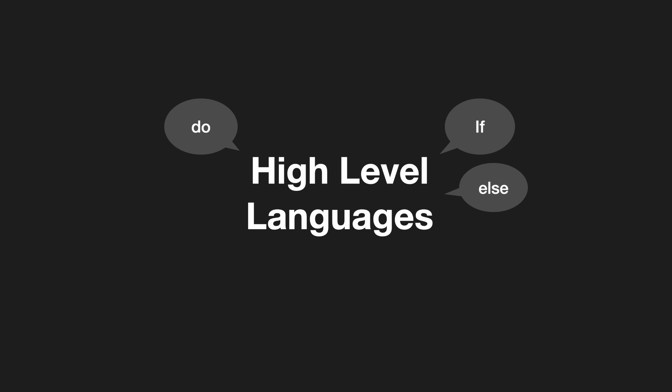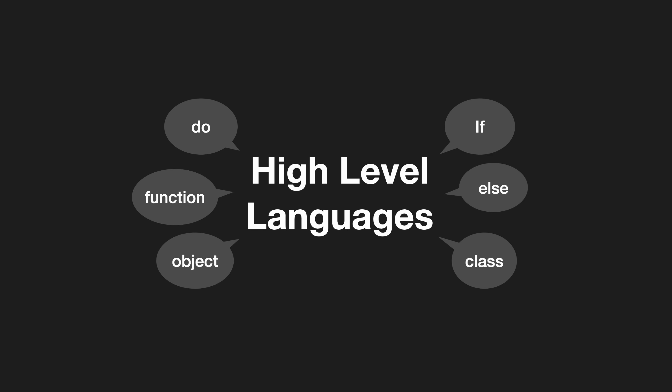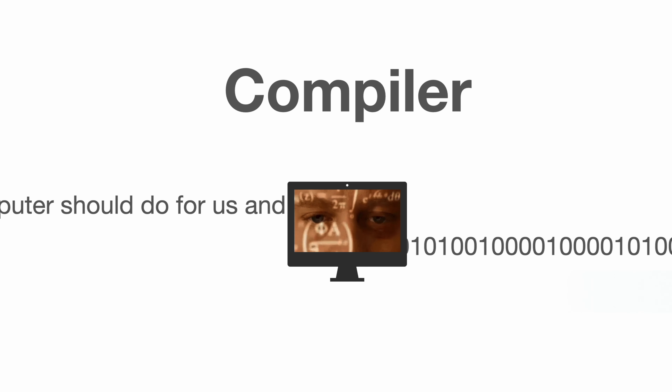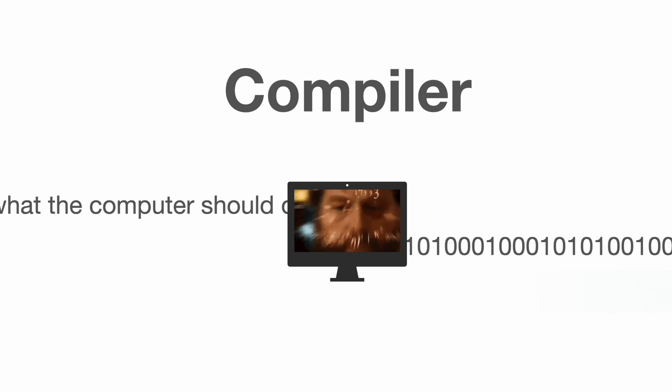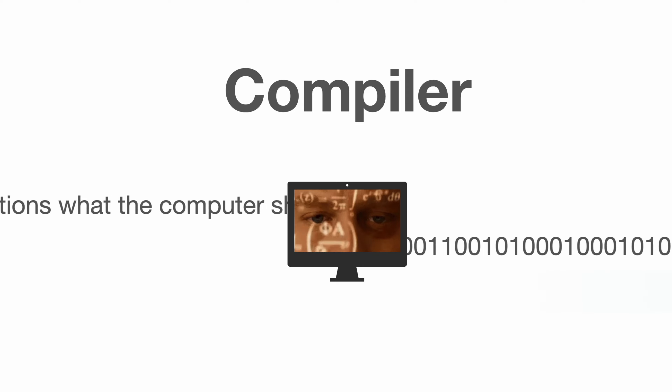High-level languages even use simple English words like if, else, do, function, class, or object — much closer to humanly used languages. The only disadvantage is that before we can actually make the computer do what we wrote in a high-level language, we need to translate it into machine code. This can make a program less efficient and we lose a bit of control over the actual hardware. But luckily, only in very specific cases this performance and control are necessary, so for most cases high-level languages are very useful and help to create software much faster.